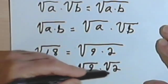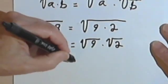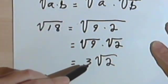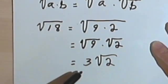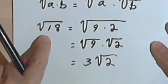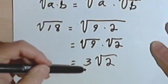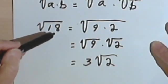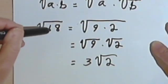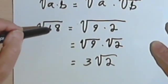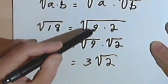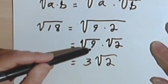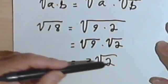Now I can write this under two separate radical signs: the square root of 9 times the square root of 2. Taking it a step further, I know the square root of 9 is 3, so I'm going to end up with 3 times the square root of 2. This is called the simplified form of the original problem. To simplify a square root, you have to remove any perfect square factors from under the radical sign. Here, a factor of 18 is 9, and I remove it by taking its square root to get 3, leaving 3 times the square root of 2.